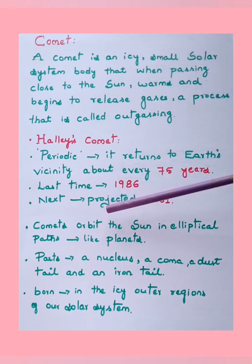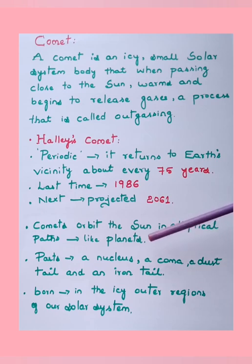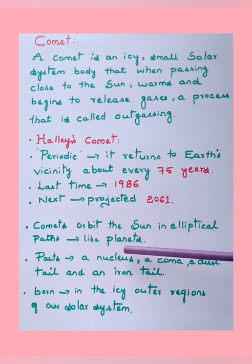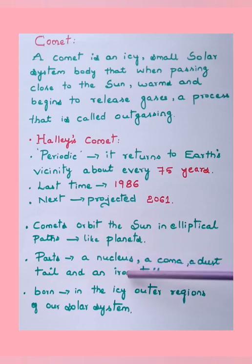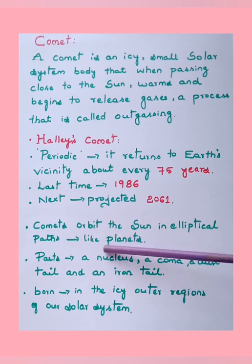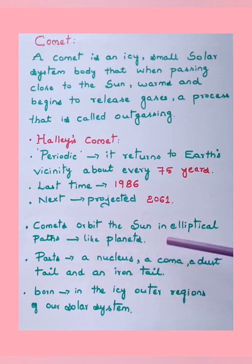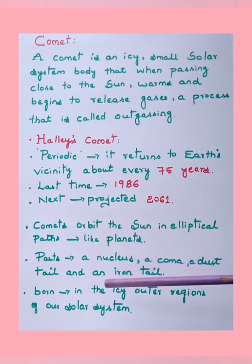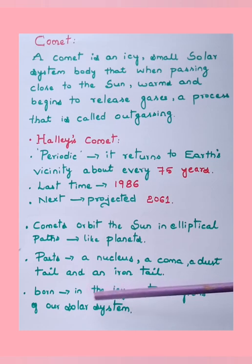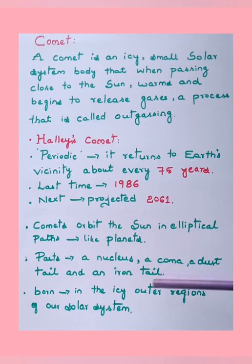Comets orbit around the sun in an elliptical path like other planets. A comet contains a nucleus, a coma, a dust tail, and an ion tail. The majority of the mass of the comet lies at the nucleus. The other parts are just lightweight mass. Comets are assumed to be born in the icy outer regions of the solar system.